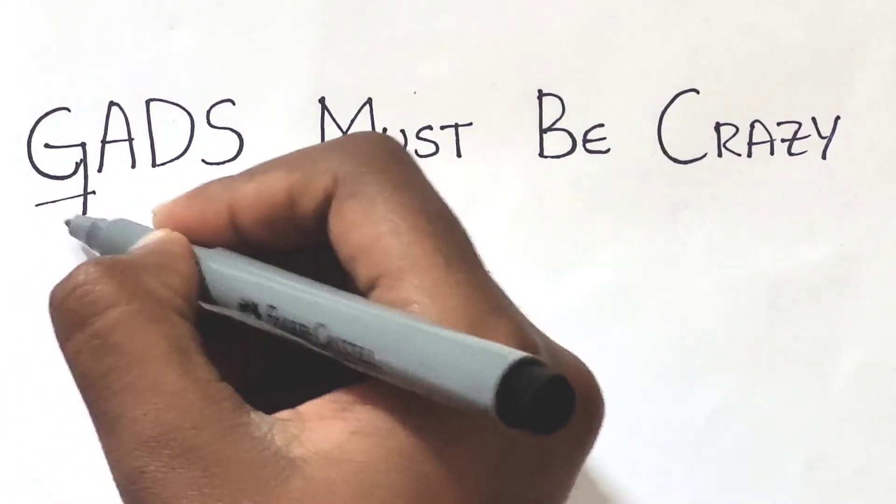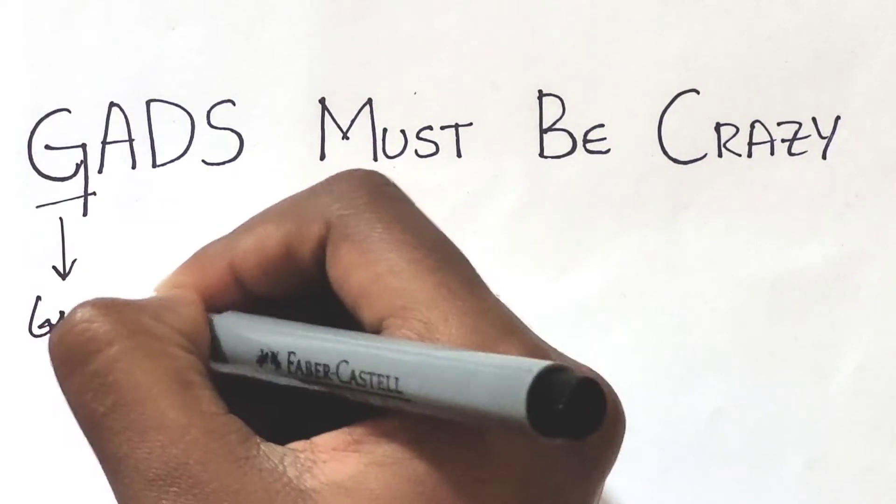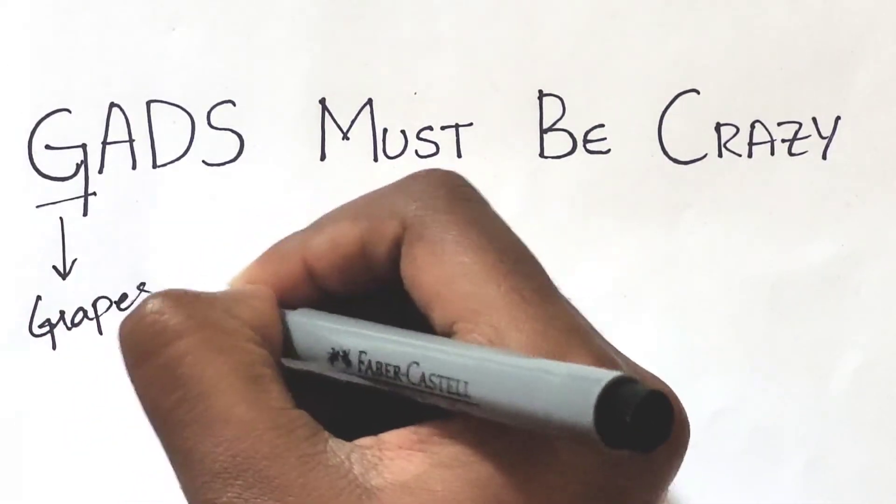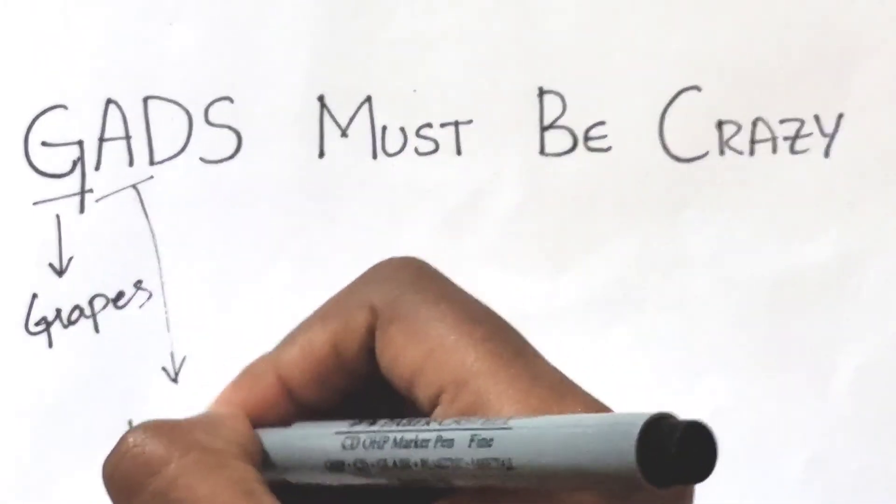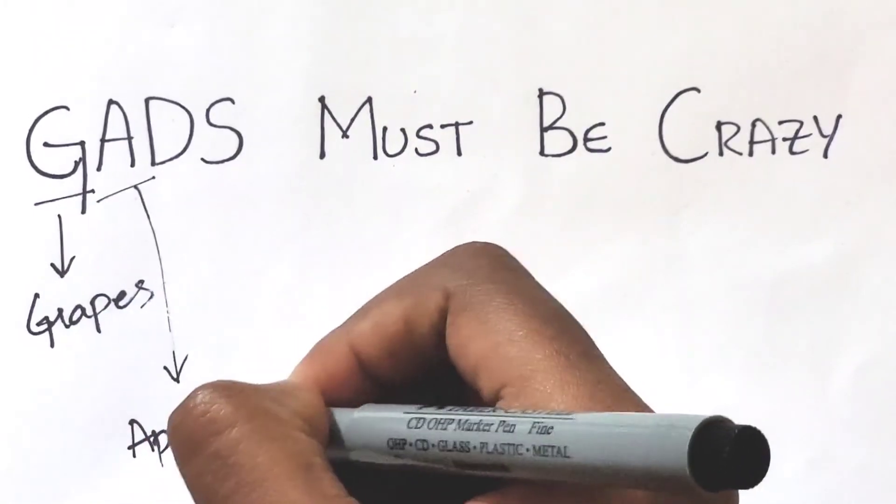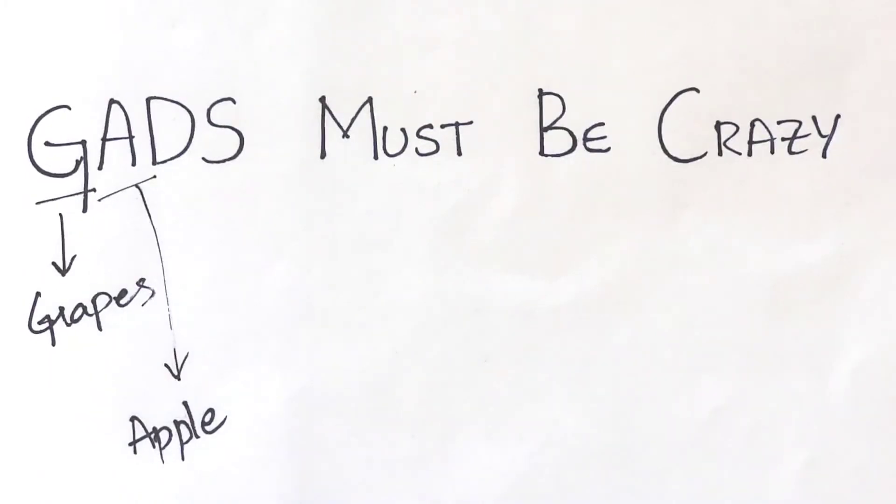So here G stands for grapes. Gibberellic acid increases the length of grape stalks. A stands for apple. Gibberellic acid helps in improving the shape of some fruits like apples.